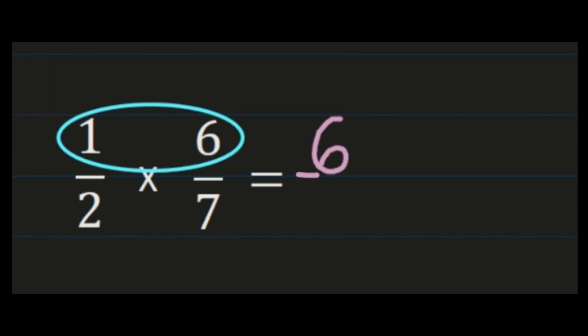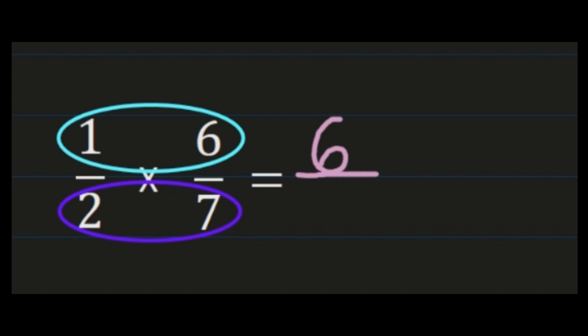Then we look at our denominators and we're going to multiply them. Our denominators are 2 and 7. 2 times 7 is 14, so 14 will become the denominator in our product. So now we have 6 fourteenths.